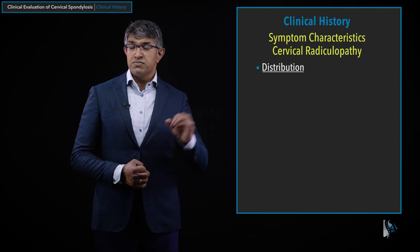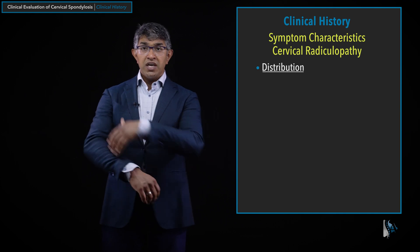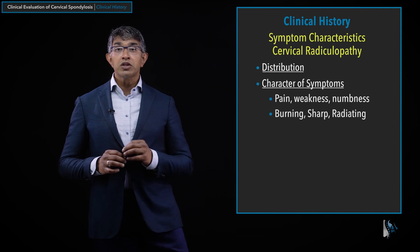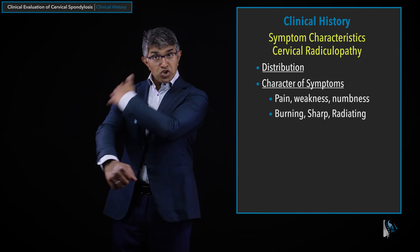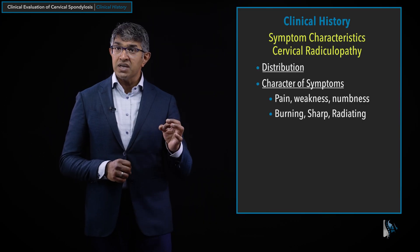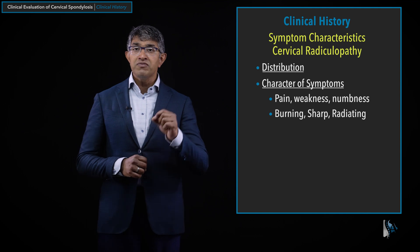I ask about distribution — right-sided, left-sided, or both — and try to map it to specific nerve roots. As people describe their symptoms, I try to think: that sounds like a C5 or a C7 radiculopathy, understanding that not every nerve reads the book. Then we talk about the character of those symptoms: sharp, shooting, lightning bolt-type pain versus burning, chronic toothache-type pain. The type of symptoms can have implications on whether the nerve irritation is acute or has been ongoing for a long time, which affects treatment options.